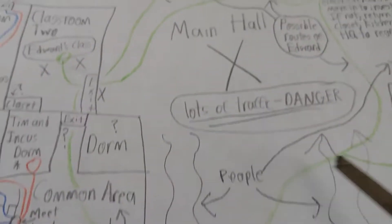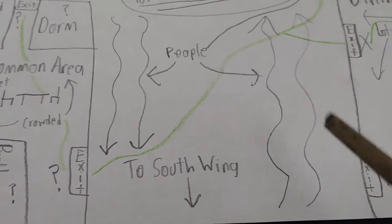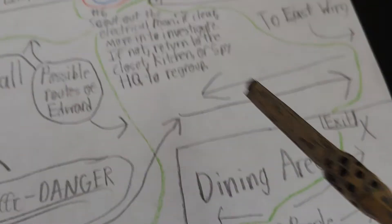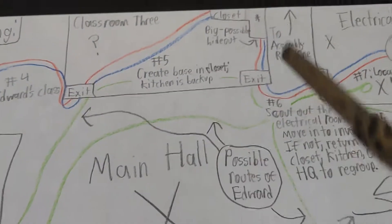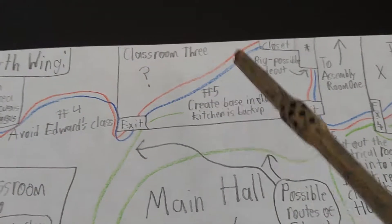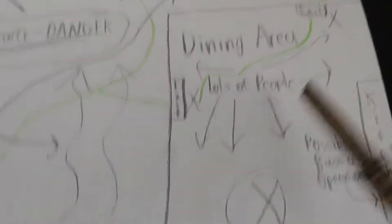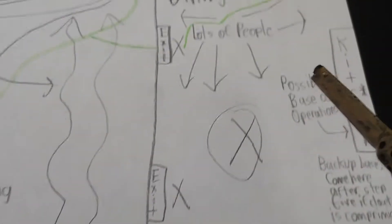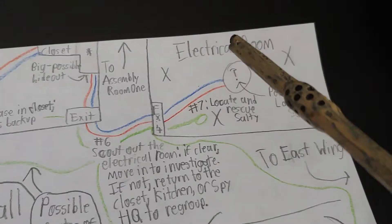Next, this is the main hallway with lots of traffic. It goes to the south wing, goes to the east wing, and it goes to assembly room one. This is classroom three, this is an important part. There's also the dining area with the kitchen, also important to the plan, lots of people, it's crowded. And then finally here's the electrical room which has the possible location of Salty.